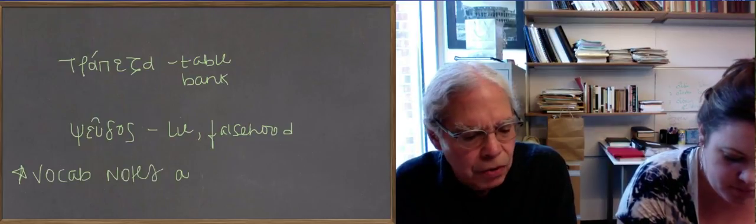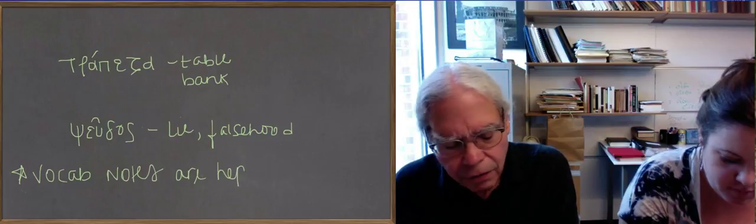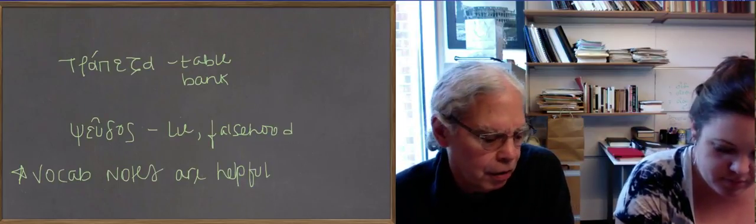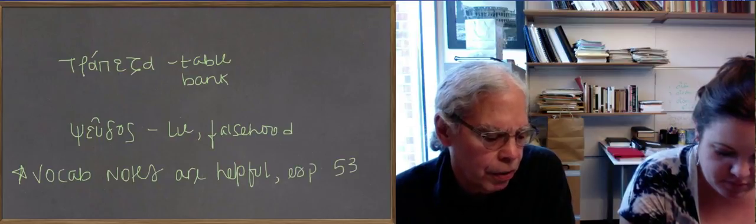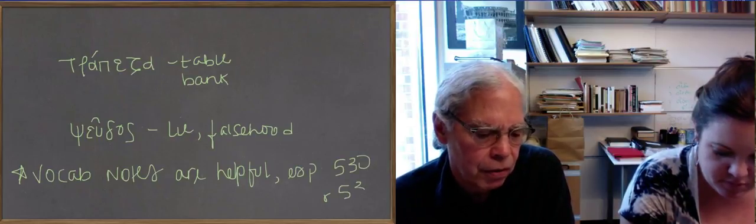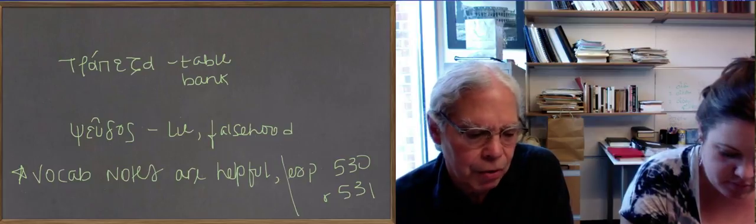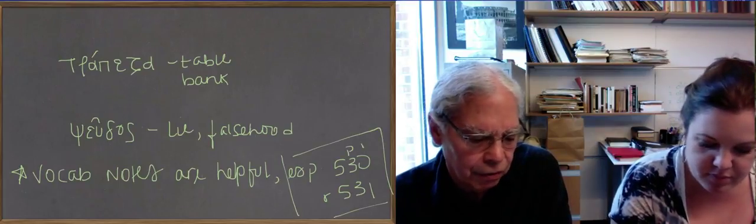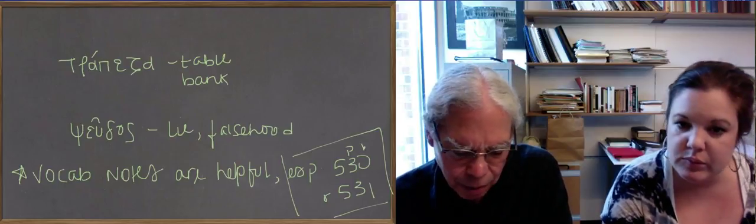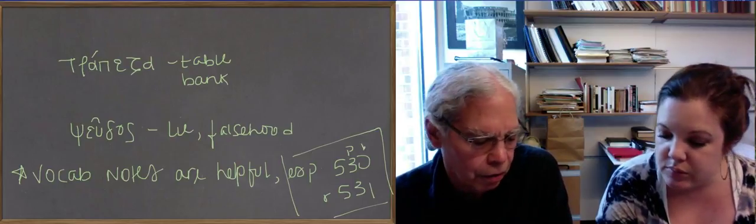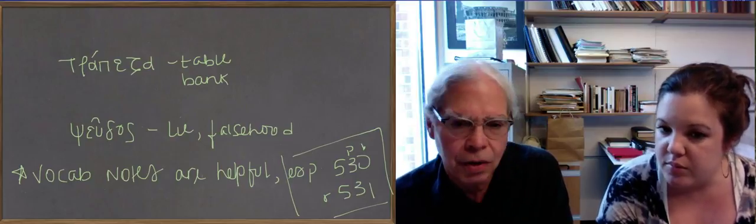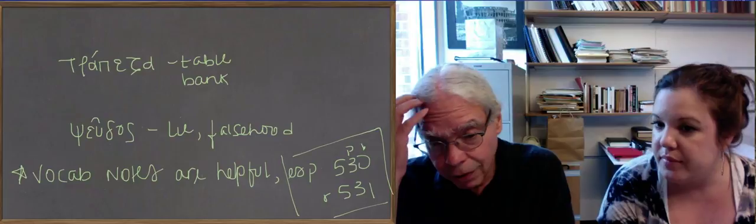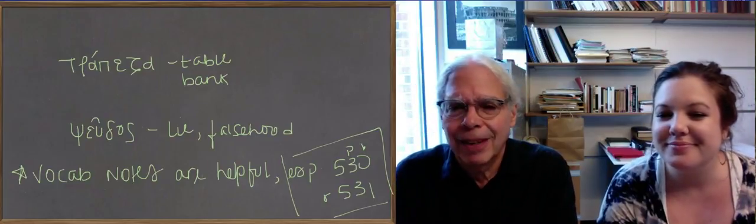In this lesson on pages 530 and 531, there's a list of all the interrogatives, the indefinites that go with them, and demonstratives, as well as the explanatory relatives that go with them. It's a good list of vocabulary words. I don't think there's anything much to add to them, but it's a good overview of a morphological process. You can see the consistencies between them. So it's worth looking at. Take care.